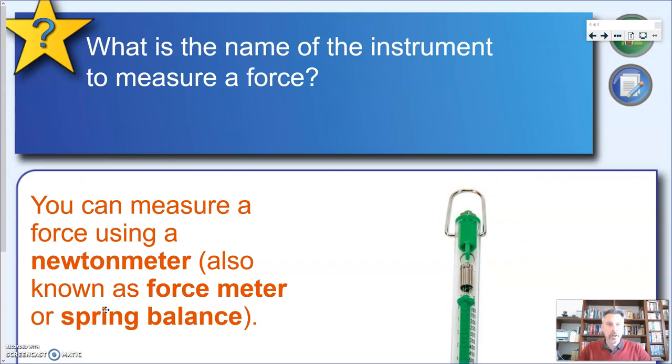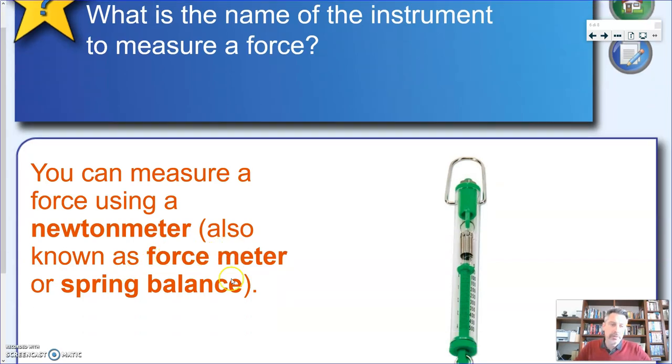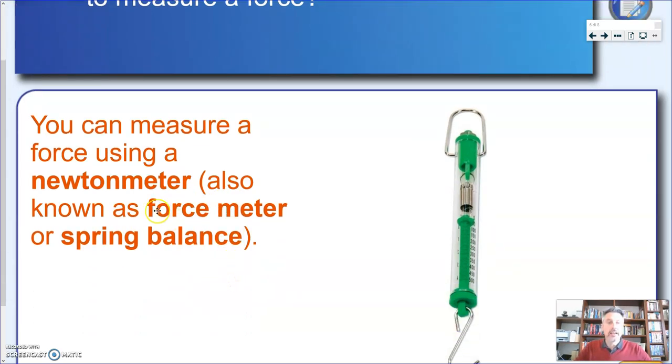Getting back to forces. What is the instrument that we can use to measure a force? Now force can be measured using a tool known as a newtonmeter—and we're going to see why it's called a newtonmeter—also known as force meter, that's pretty obvious, also known as spring balance. Now I will probably use this last term more often, but you have to recognize all three of them. So if you see written somewhere newtonmeter or force meter or spring balance, you should always remember what they mean. They say exactly the same thing. So that tool that we can use to measure how strong a force is.